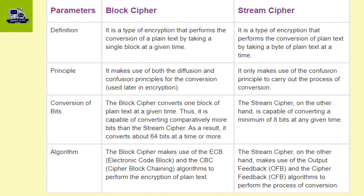First, the definition of block cipher. It is a type of encryption that performs conversion of plain text by taking a single block at a given time. Block cipher converts one full block of plain text into cipher text at a time.